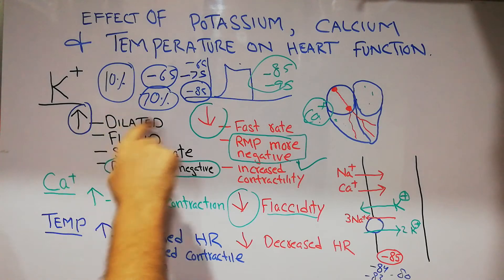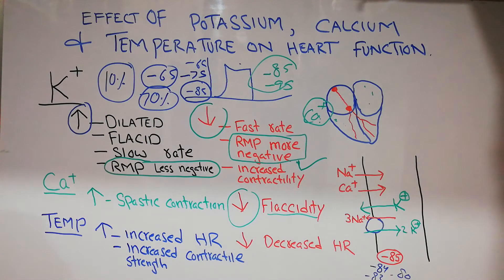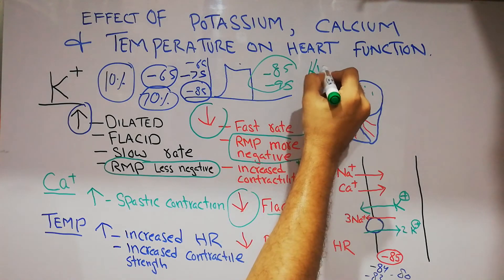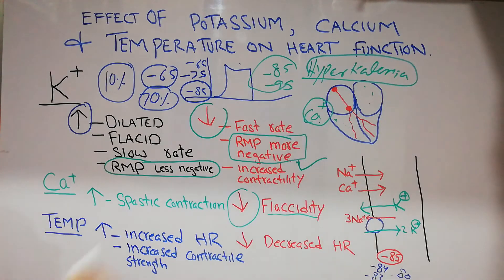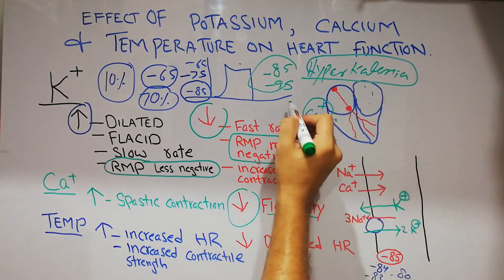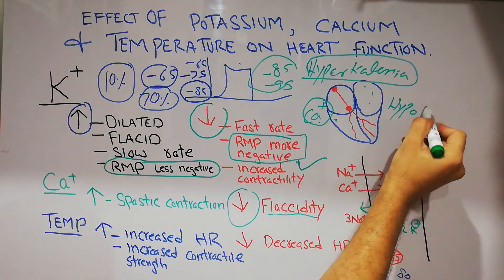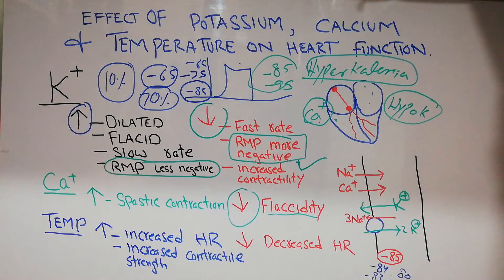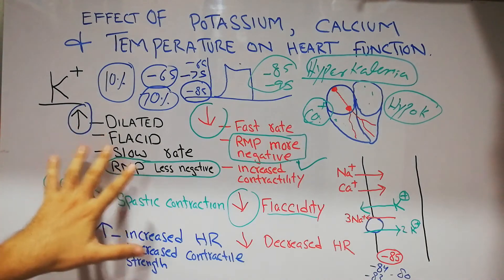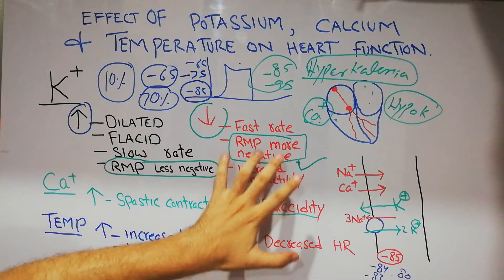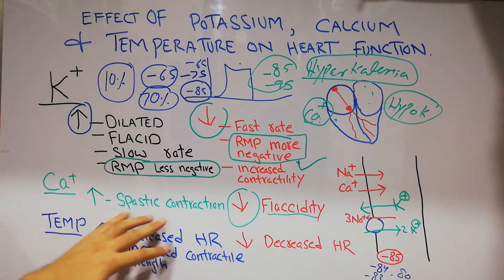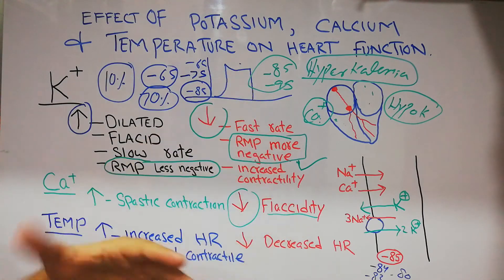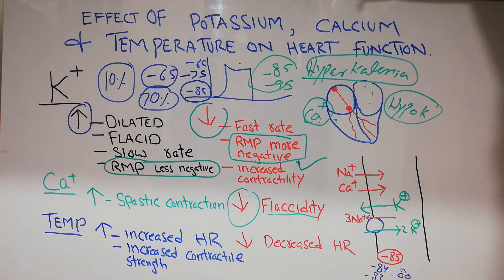To use the proper terminology: hyperkalemia is the increased level of potassium in the blood and hypokalemia is the decreased level of potassium in the blood. Similarly, hypocalcemia — decreased calcium level — will lead to flaccidity of the heart.